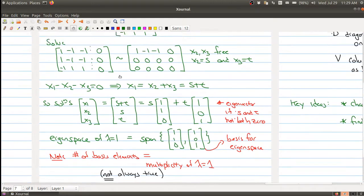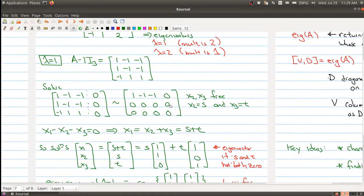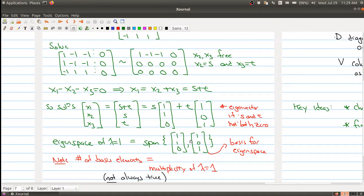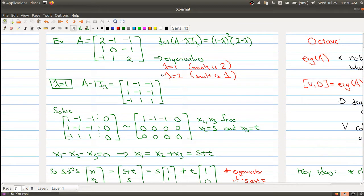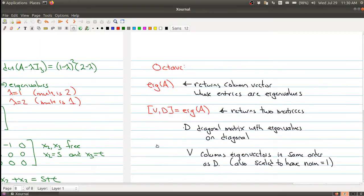The key point you want to notice is that when you're looking for eigenvectors, sometimes you may find a whole family, and it could be a large family. In this case, it's a two-dimensional family of vectors that are eigenvectors for the eigenvalue lambda equals 1. Hopefully that example is a little bit illuminating.